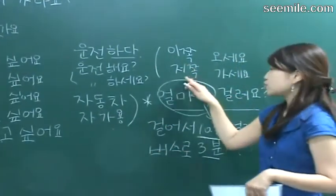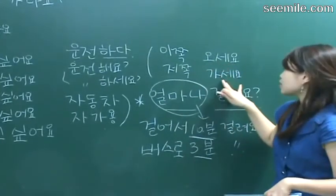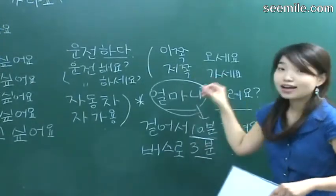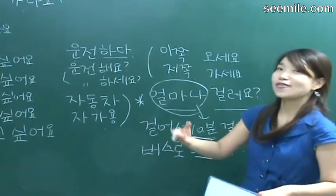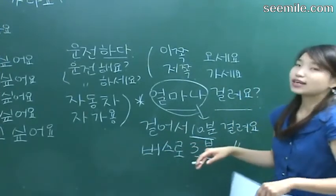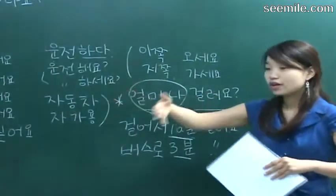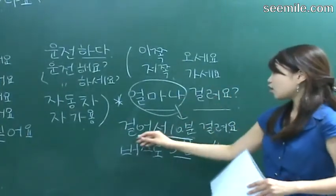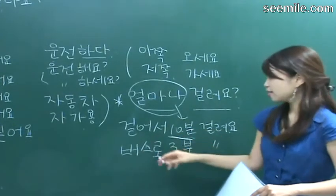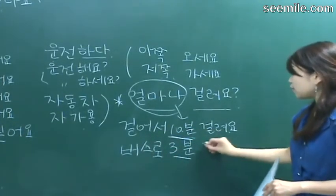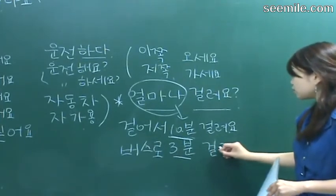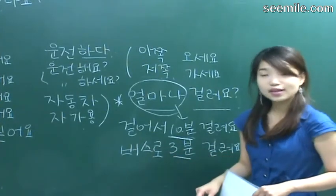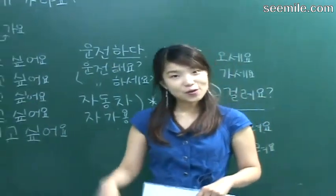이쪽 — this way; 저쪽 — that way; 오세요 — please come; 가세요 — please go. 저쪽으로 가세요. 저쪽으로 가 sounds rude — get away. Say 저쪽으로 가세요; 이쪽으로 오세요. 얼마나 걸리나요? How long does it take? 걸어서 10분 걸려요 — it takes 10 minutes by walking. 버스로 3분 걸려요 — it takes 3 minutes by bus. Have a great day and see you next time. Bye!